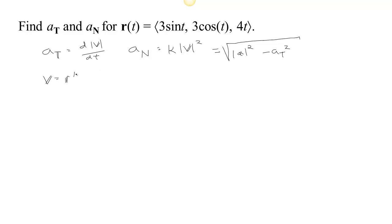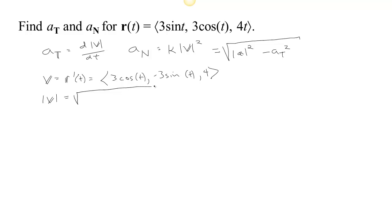The velocity is the derivative of position with respect to time, which gives us 3 cos t, minus 3 sin t, and 4. The speed is the square root of 9 cos² t plus 9 sin² t plus 16, which is the square root of 9 plus 16, equals the square root of 25, which is 5.